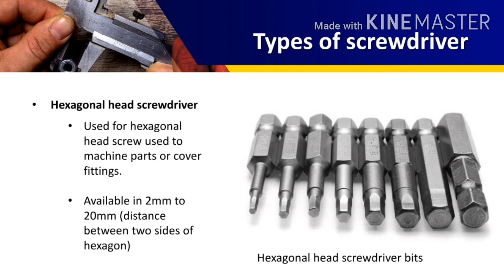The hexagonal head screwdriver has hexagonal teeth and is used for machine parts and cover fitting. Instead of the hexagonal head screwdriver, we commonly use Allen keys. Allen keys look like the English letter L — a hexagonal rod bent in an L shape. Allen keys are available in various sizes and in sets of 8 pieces.